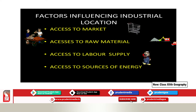The next factor is access to labor supply. Labor is a prior requirement of an industry. When an industry is set up, lots of skilled and semi-skilled laborers are required. Though industries are automated and mechanized, lots of laborers are still required to perform different tasks. The cheap availability of labors is like a success mantra for the growth of different industries.